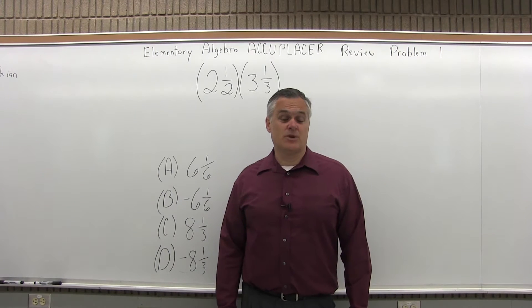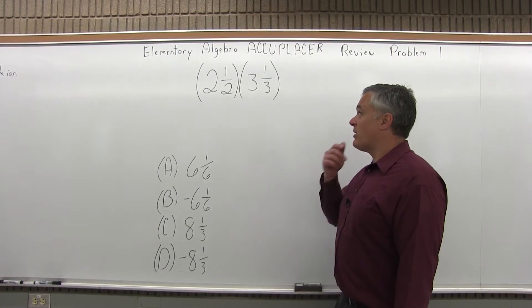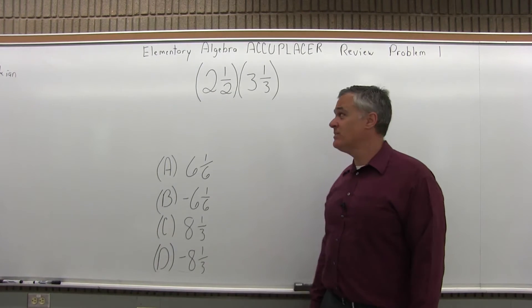This is the Elementary Algebra Accuplacer Review, Problem 1. We have two numbers to multiply: 2½ times 3⅓, and we have four possible options that our answer could be.